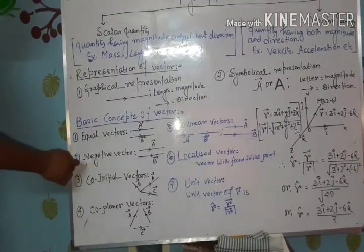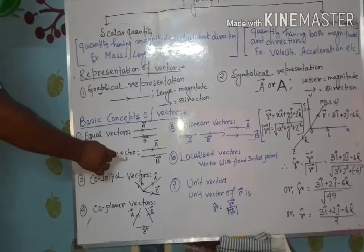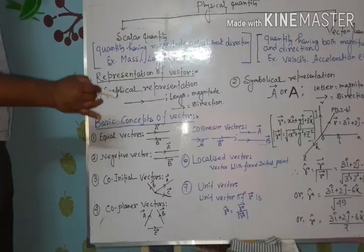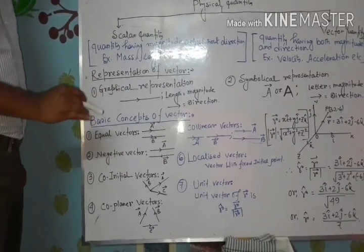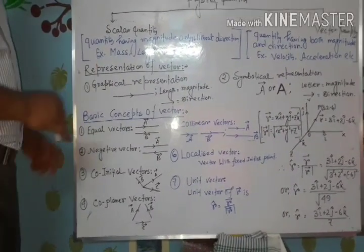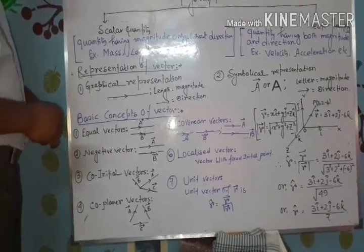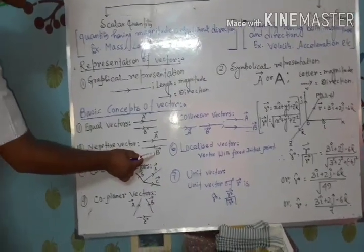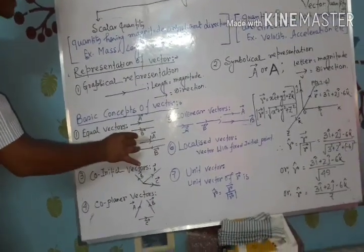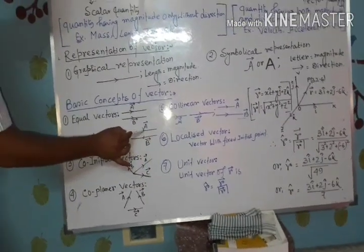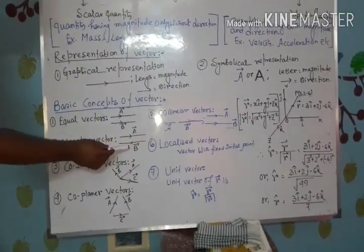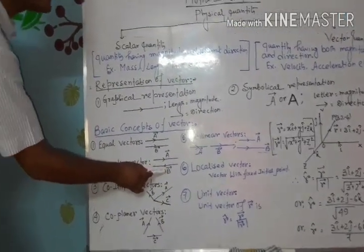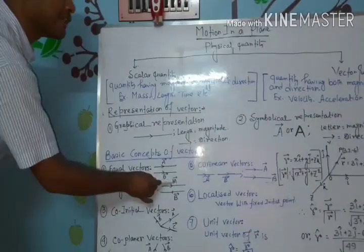Next: Negative Vector. A vector is said to be the negative of a given vector whenever the vector has the same magnitude but the direction is opposite. See the example: B vector has the same magnitude as A since the lengths are equal, but the arrows show their directions are opposite. That's why A is a negative of B, or B is a negative of A.